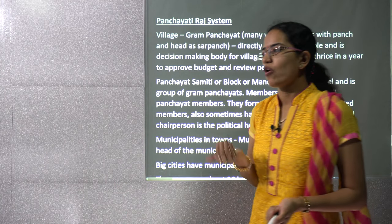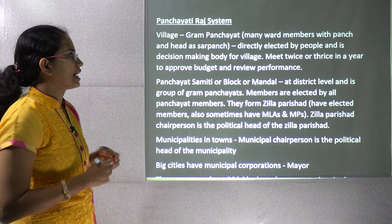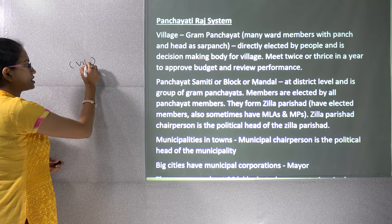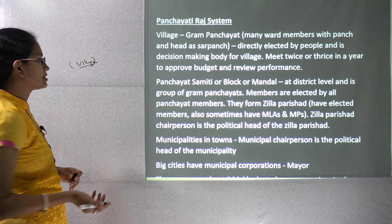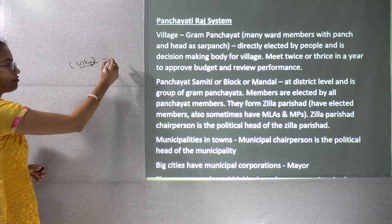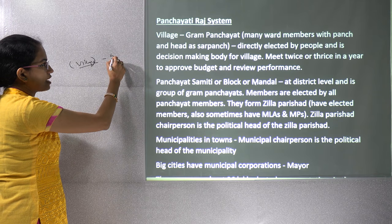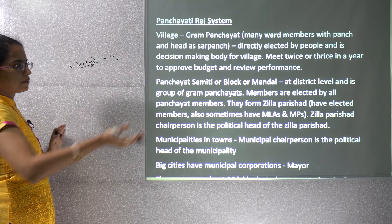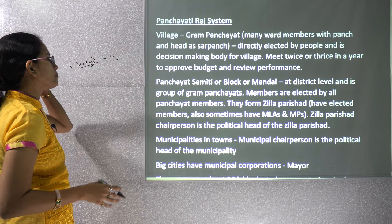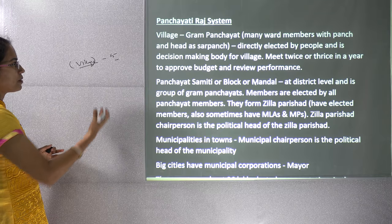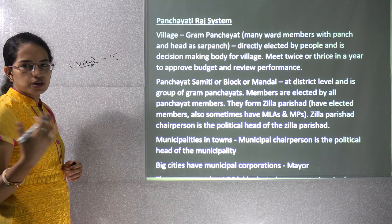In the Panchayati Raj system, the lowest level is the village, where you have the Gram Panchayat. The Gram Panchayat consists of the Sarpanch and other ward members known as Panch — 'panch' meaning five. They are elected directly by the people, take decisions for the people, approve the budget, and review performance.